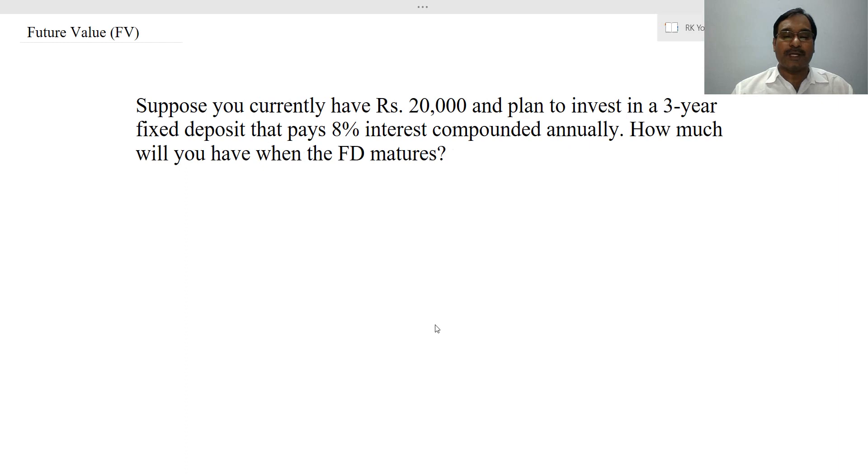Here is the scenario. Suppose you currently have Rs. 20,000 and plan to invest in a 3-year fixed deposit that pays 8% interest compounded annually. How much will you have when the FD matures?